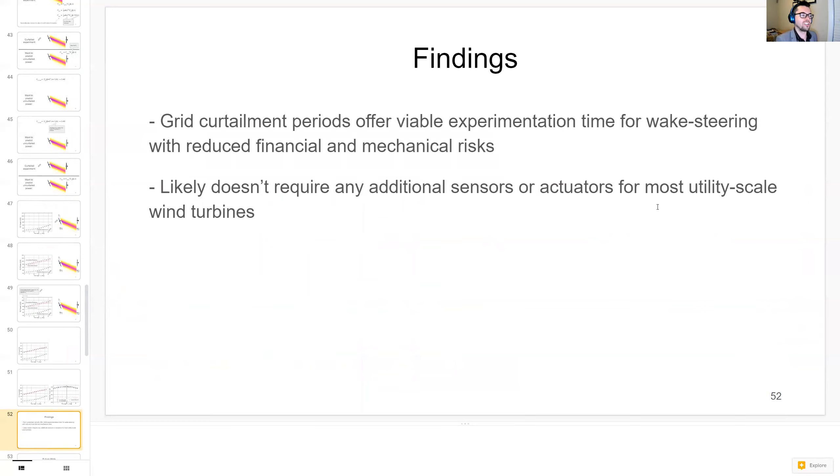So the overall findings are grid curtailment periods offer viable experimentation time for wake steering with reduced financial and mechanical risks. And these likely don't require any additional sensors or actuators for most utility scale wind turbines to make this happen.